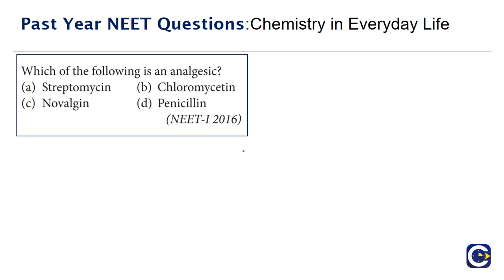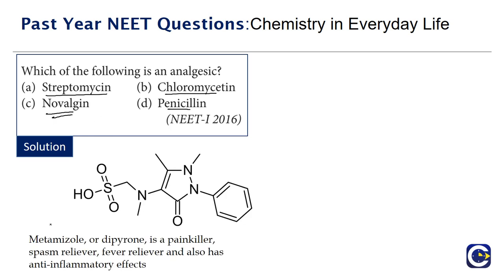From NEET 2016 Paper 1: which of the following is an analgesic? Other than Novalgin, the remaining three options — penicillin, chloromycetin, and streptomycin — are all antibiotics. Novalgin is the commercial name for metamizole, which is used as a painkiller, to provide relief from fever, and for anti-inflammatory effects. An analgesic provides relief from pain, fever, and inflammation. So the correct answer is option C, Novalgin, whose structure is shown here.